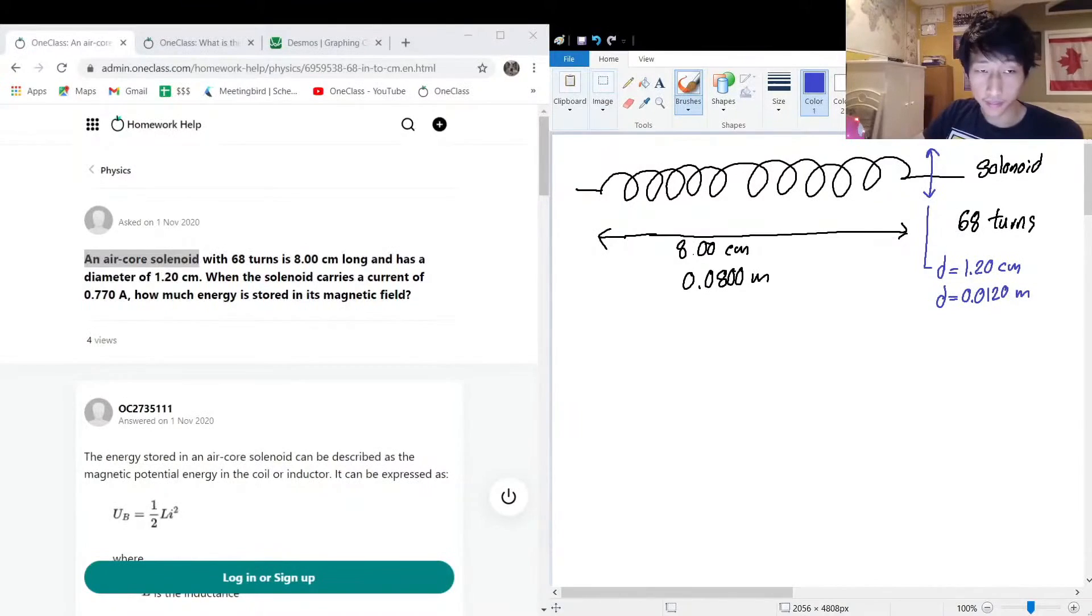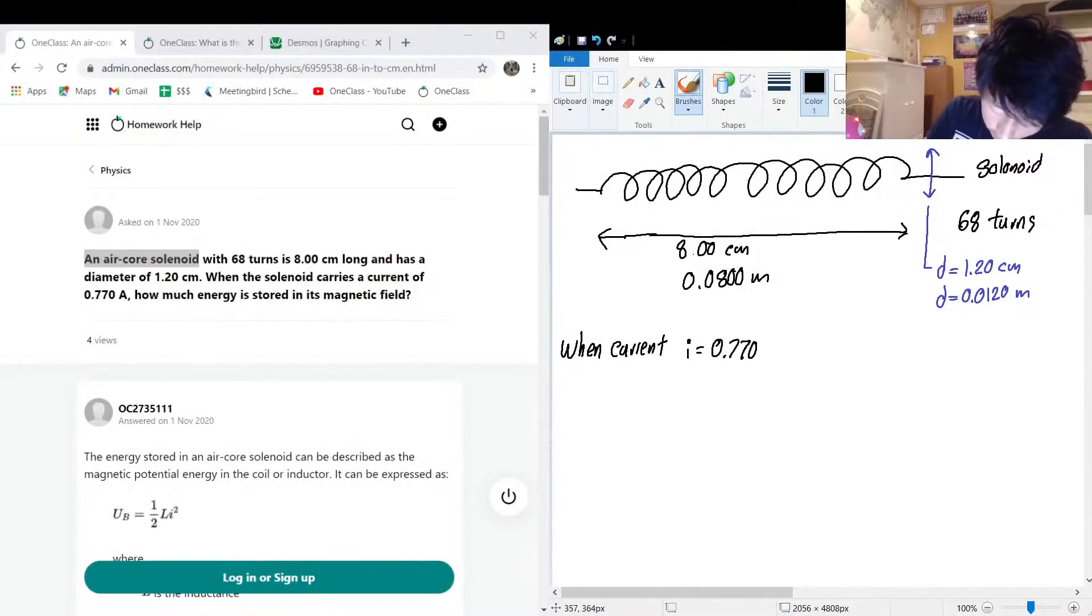And when the solenoid carries a current of 0.77 amps, when current, the solenoid carries I equals 0.770 amps, find energy stored.